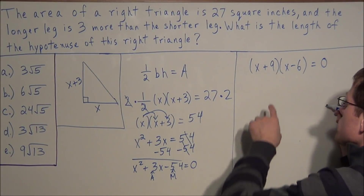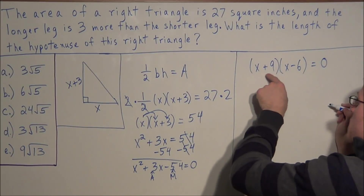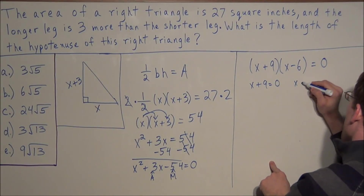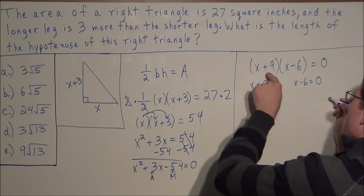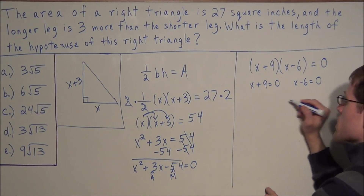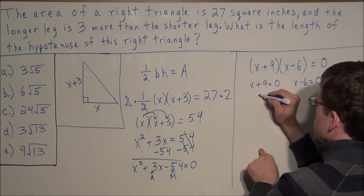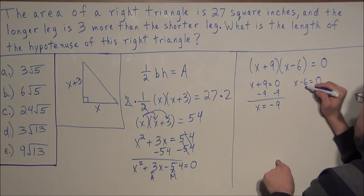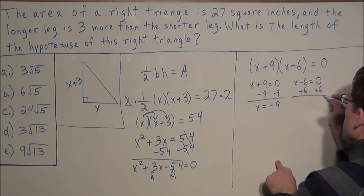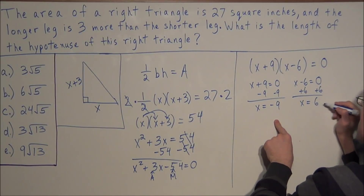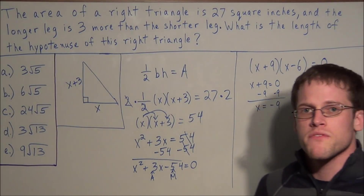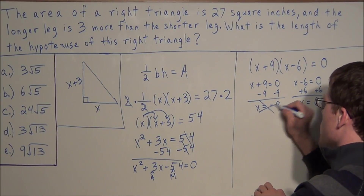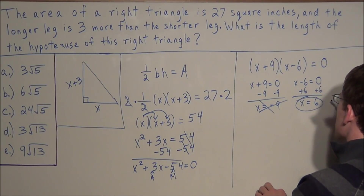We can say x equals negative nine and x equals positive six by negating the two signs, or by solving x plus nine equals zero and x minus six equals zero. Subtracting nine from both sides gives x equals negative nine, and adding six gives x equals positive six. But since this is a problem of distance — the length of a side of a triangle — we can't have negative distance, so we reject x equals negative nine. Our x value must be positive six.